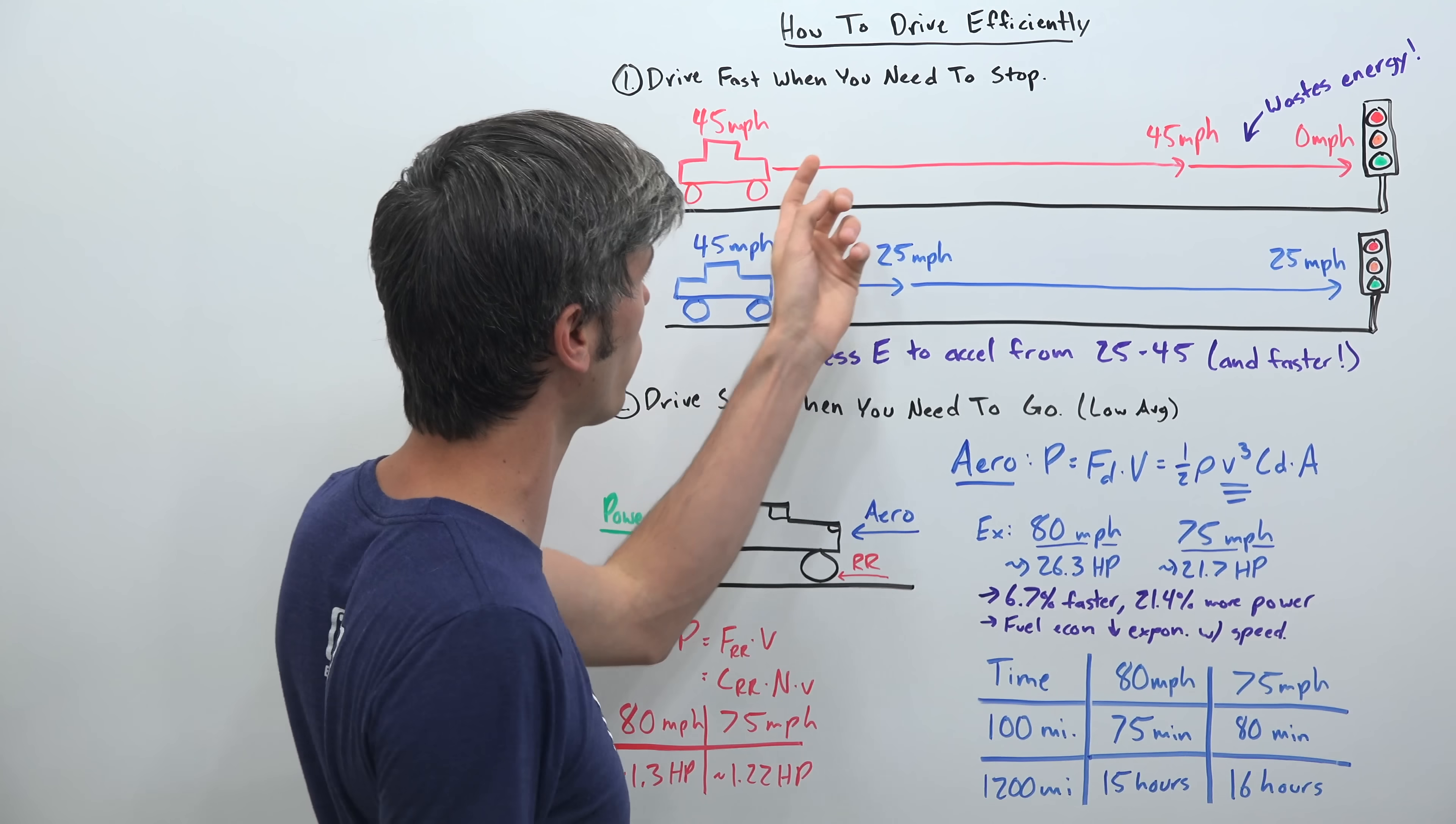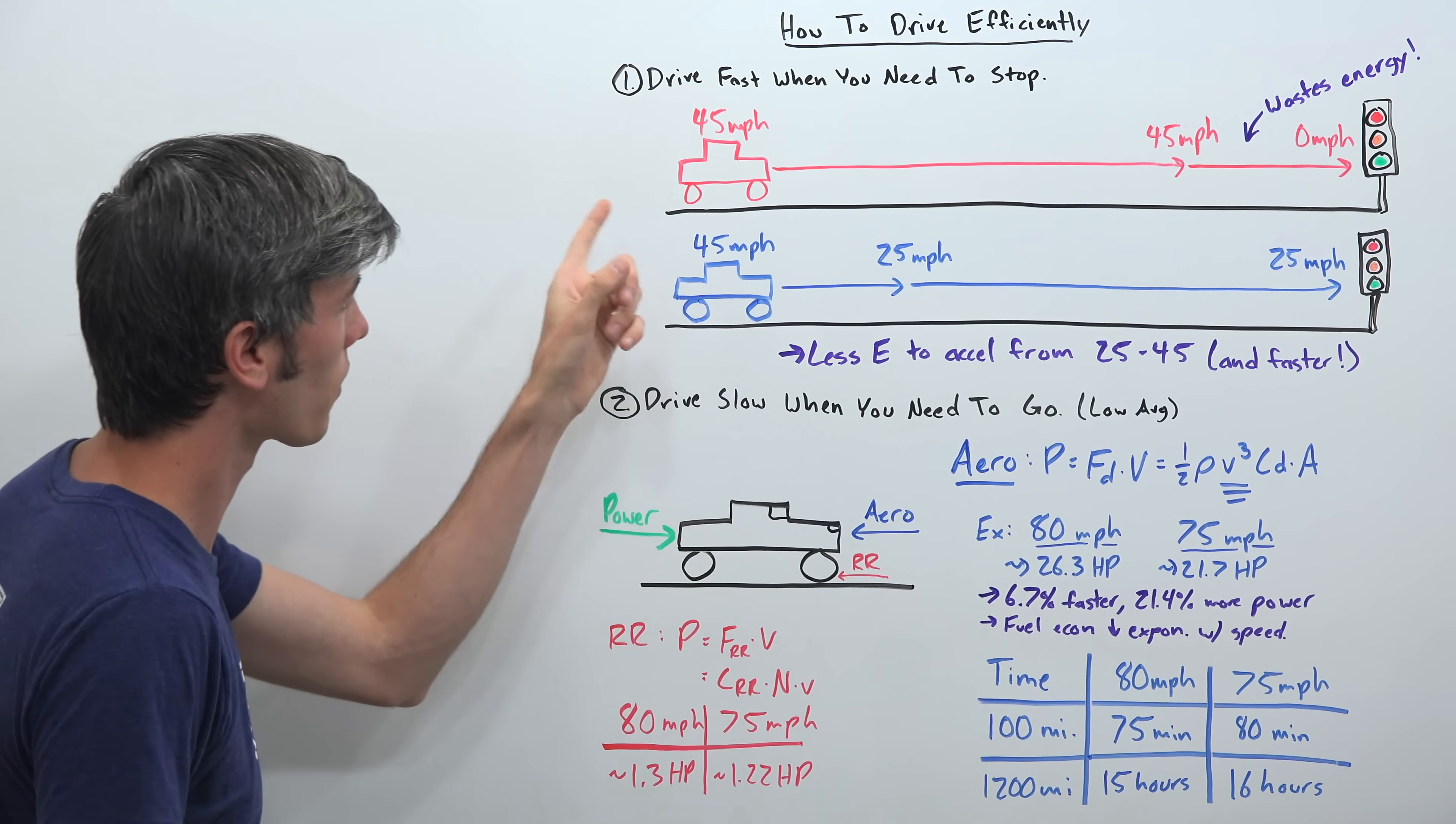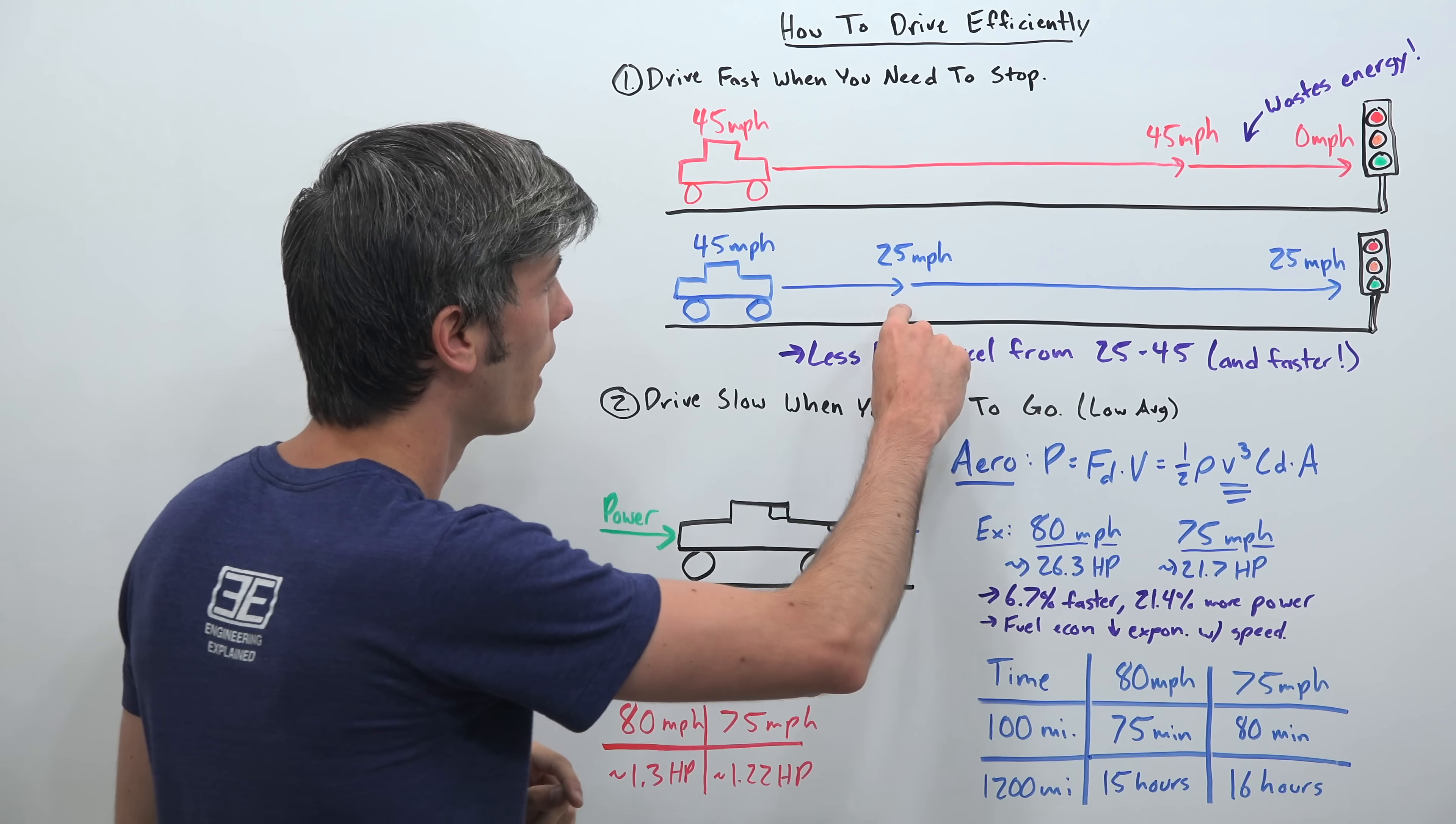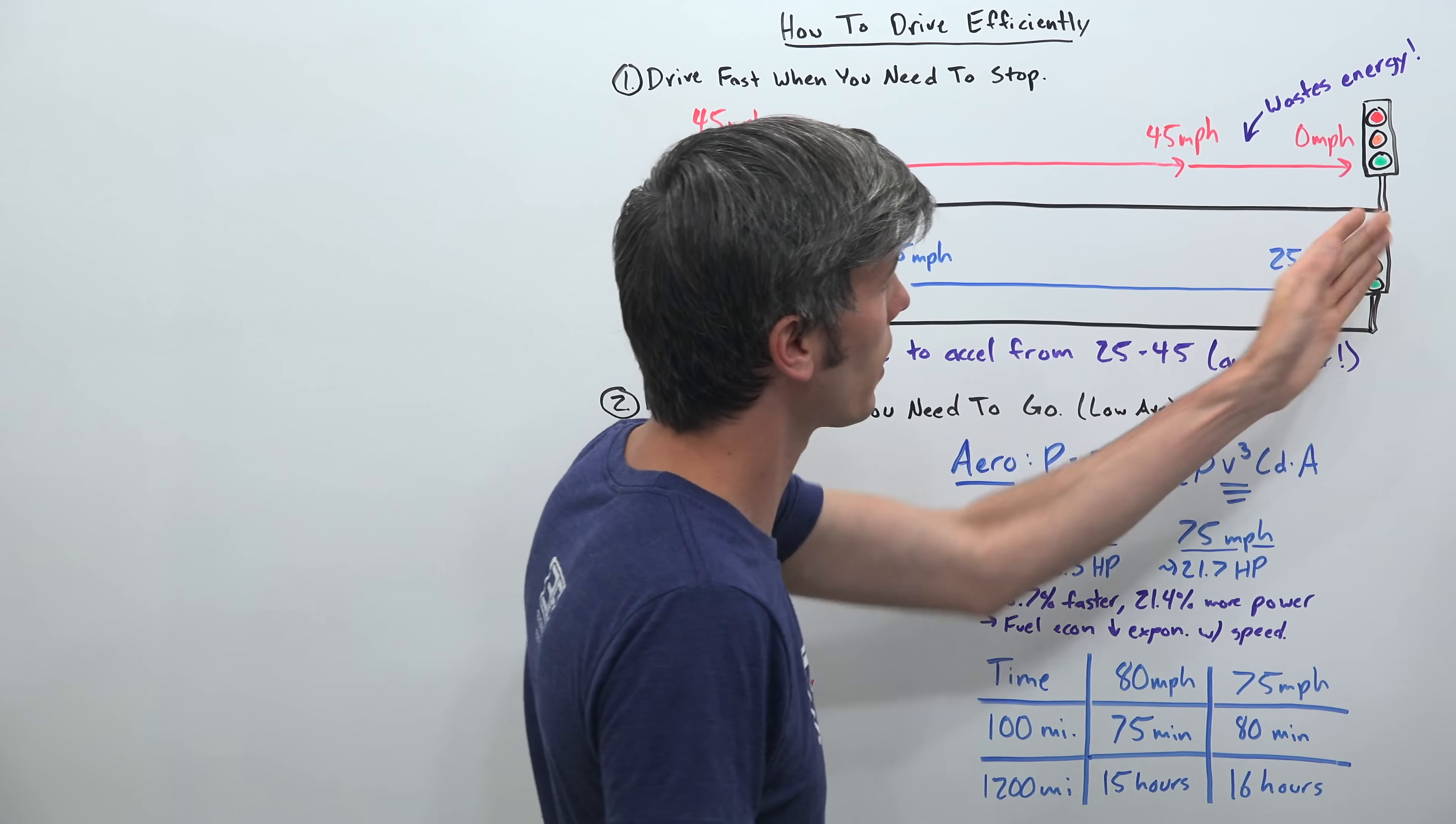This is wasting energy because we took all of that energy that we had of the car, that inertia of the car traveling forward, and we brought it down to zero. We put all that heat into the brakes when we could have actually used that to continue moving along. So the other car is approaching this same stoplight and it sees that it's red. So they let off the gas and they slow down to about 25 miles per hour. And then they just sit here at 25 miles per hour until they get to the light.